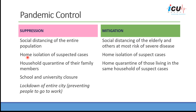The second measure in suppression is home isolation of suspected or confirmed cases, similar to what we do in mitigation. Also, household quarantine of entire family members of suspected or confirmed cases, which is similar in both strategies. The difference is that in the suppression strategy, we close schools and universities completely for the entire duration until the pandemic is controlled and until we have other measures such as a vaccine.